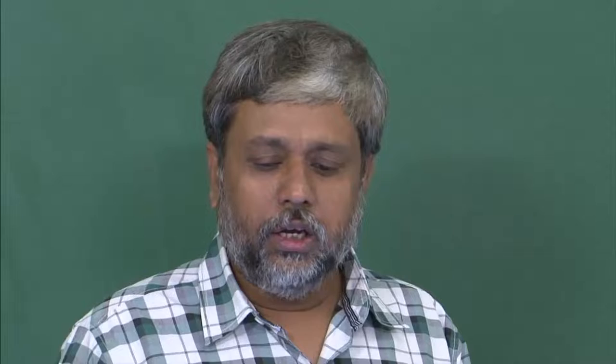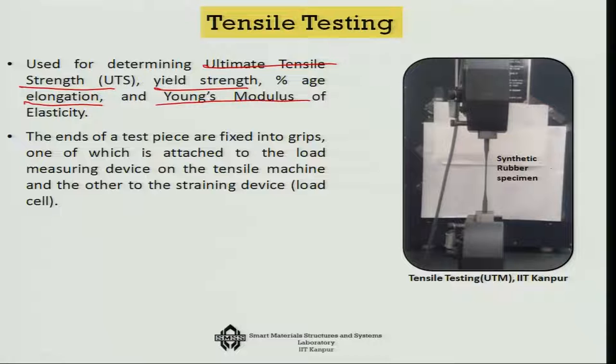How do we measure these properties? We use a tensile testing system — a machine known as the universal testing machine (UTM) — in which we find out properties like ultimate tensile strength, yield strength, percentage elongation, and Young's modulus of elasticity. In a UTM, you can load a sample in various ways: tension, compression, and shear. The loading can also be dynamic, which can include things like fatigue.